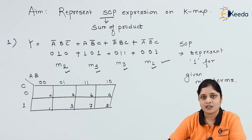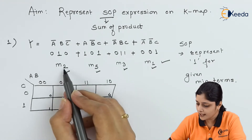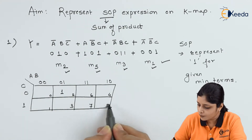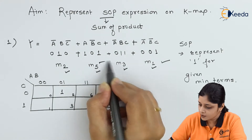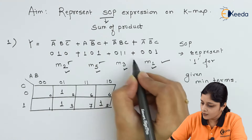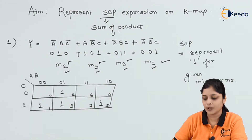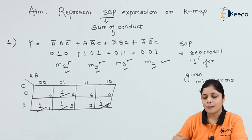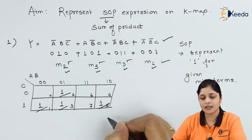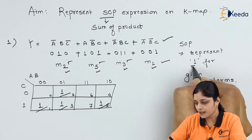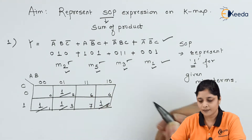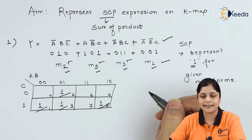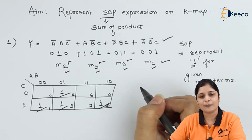This is the SOP form, so represent logic 1 for the given minterms — forget about 0s, just represent 1s. For m2, represent 1 inside box 2. Then search for m5 and represent 1 there. For m3, represent 1, and for m1 represent 1. These are our representations — mapping of the given SOP expression on the Kmap. After this, simplification follows. This is the first step of mapping onto the Kmap.